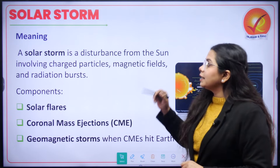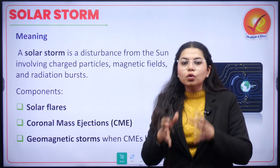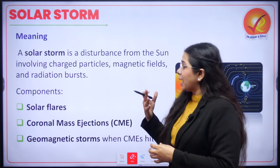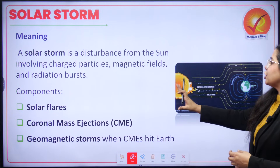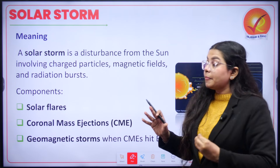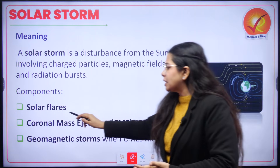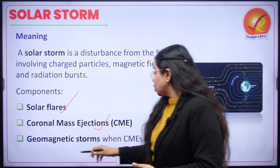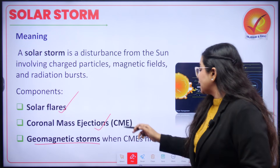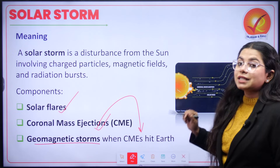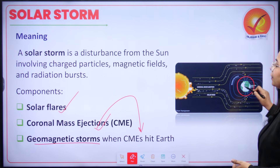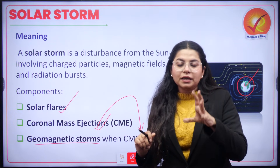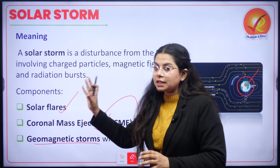We will now move on to the next term: solar storm. A solar storm is basically a massive eruption of charged particles — that is plasma — magnetic fields, and radiation bursts that take place from the sun. When talking about a solar storm, it may contain just solar flares or a combination of solar flares and coronal mass ejections. Geomagnetic storms are created when coronal mass ejections hit Earth's magnetic field.